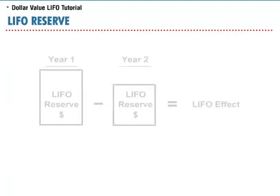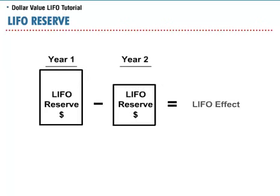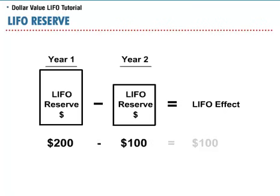The change in the allowance balance from one period to the next is called the LIFO effect. The LIFO effect is the adjustment that must be made to the accounting records in a given year. We computed the LIFO reserve to be $200. If we compute the LIFO reserve the next year to be only $100, the LIFO effect would be the difference between the two years, or $100.